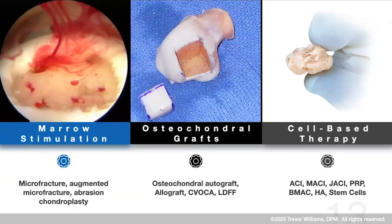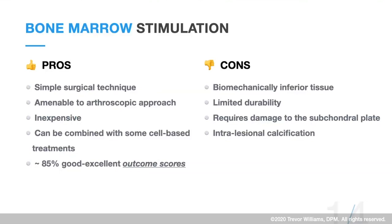Treatment options can be broken into three categories: marrow stimulation — which includes microfracture, augmented microfracture with a scaffold to stabilize the clot, and abrasion chondroplasty; osteochondral grafts — large osteochondral allografts, autografts, or lift-drill-fill-fixate techniques; and cell-based therapies, which rely on the biological activity of the graft material. Each has its application, pros, and cons that will help guide your decision-making.